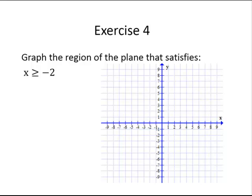Finally, x is greater than or equal to negative 2. If we first think about where x equals negative 2, recall that that is a vertical line. We will use a solid line since it is an or-equal-to inequality. Here is x equals negative 2. Where are the x values greater than negative 2 — to the left or to the right of the boundary? The x values are greater than negative 2 to the right of the boundary, so we shade to the right.